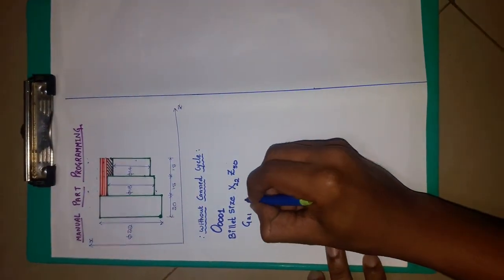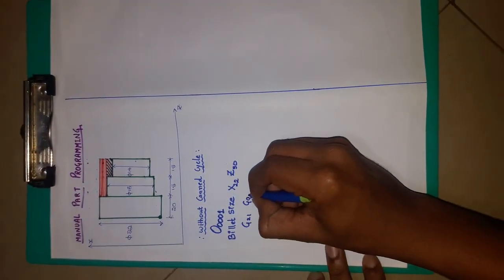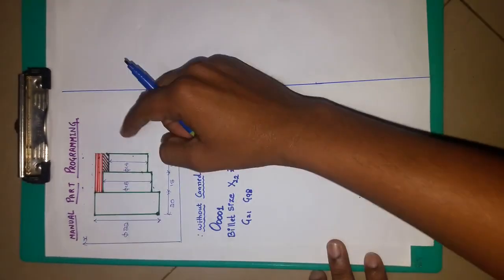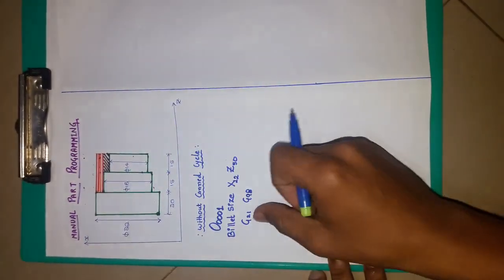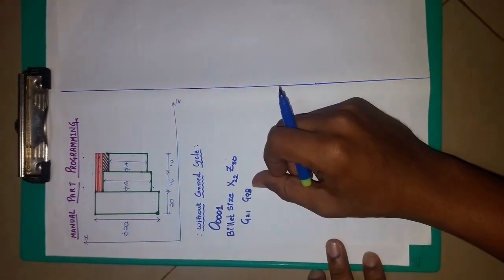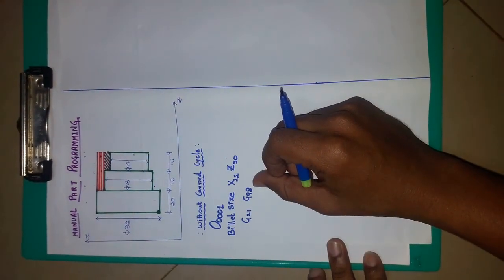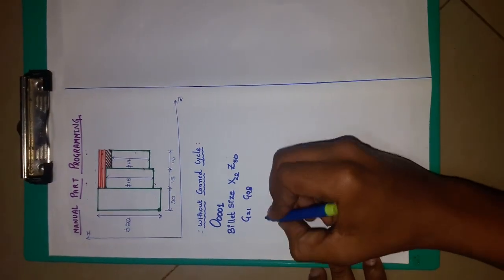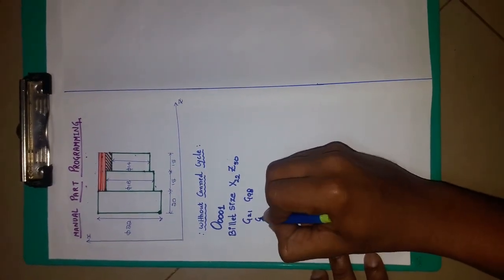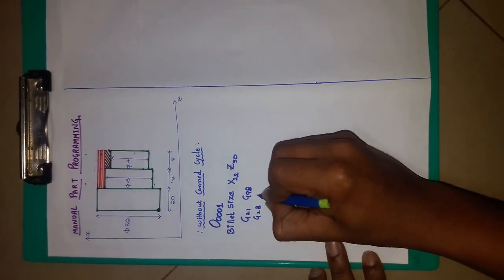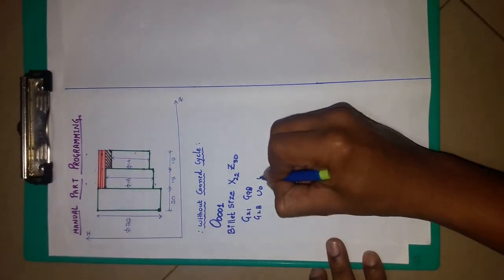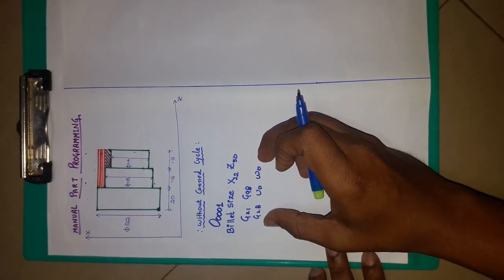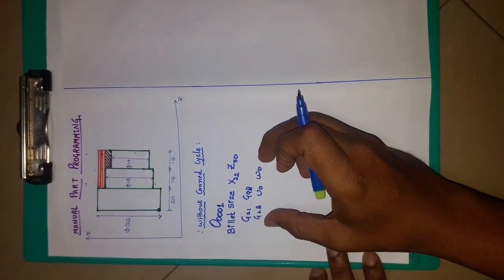G21 and G98: G21 means the data inputs we are giving are in mm, and G98 means feed per mm. Then G28 U0 W0, which indicates the home position in the FANUC software.